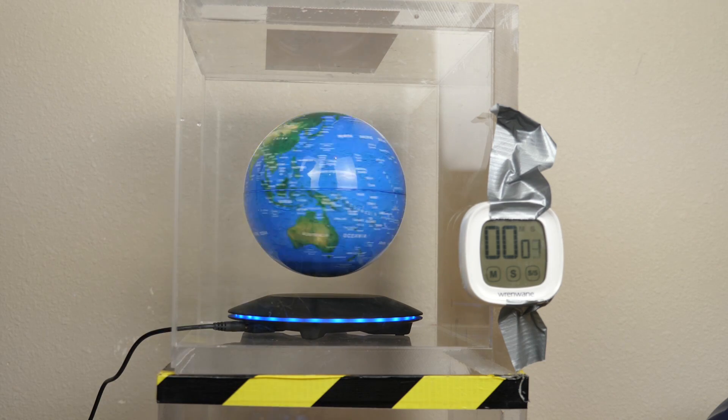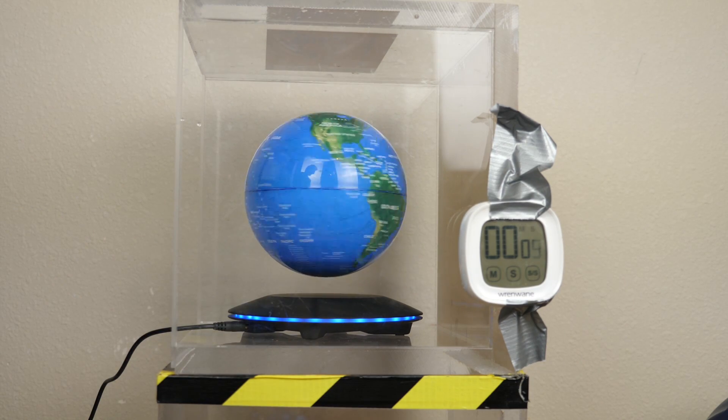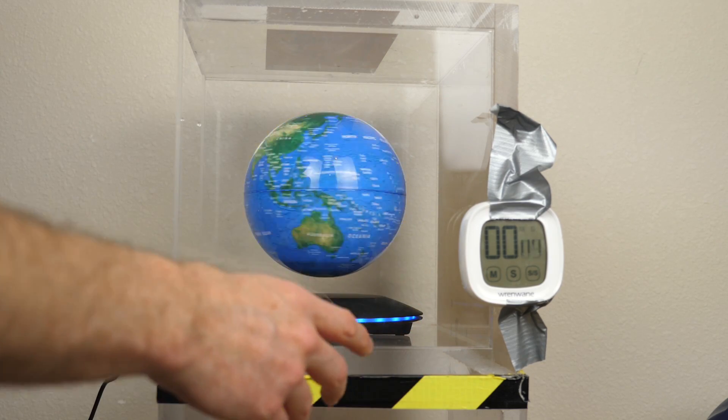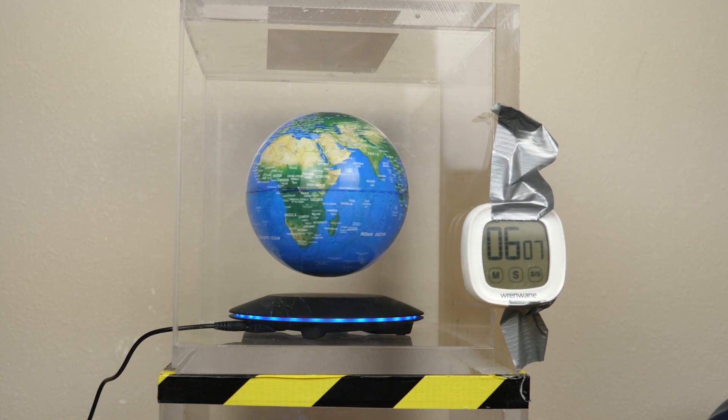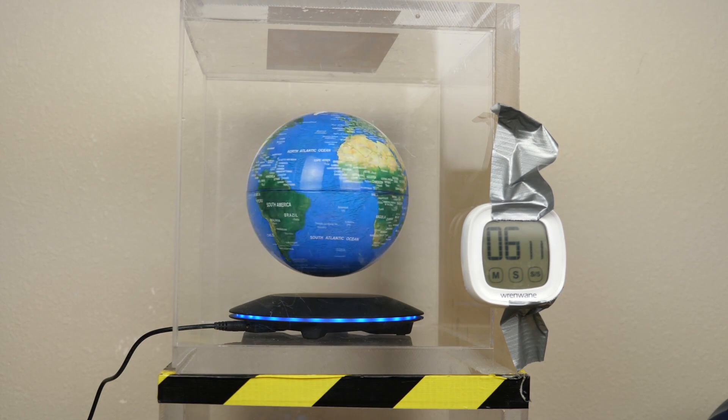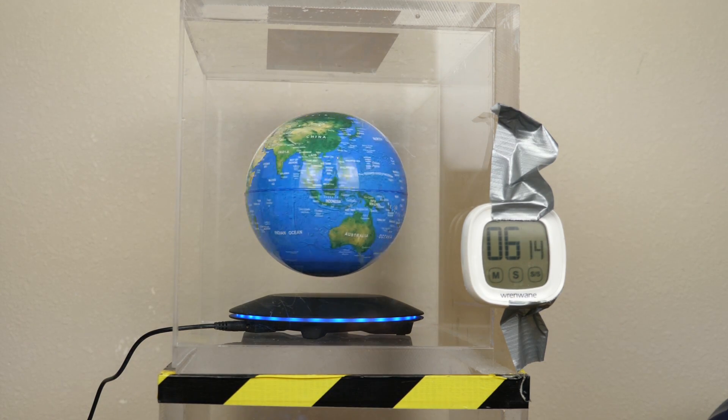It's going about one and a half revolutions per second now. Let's start the timer and see how long it takes to get to a half a revolution per second. Okay, so it's going about a half a revolution per second now. It looks like it took around six minutes.